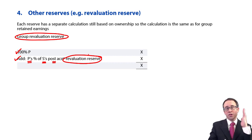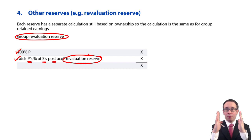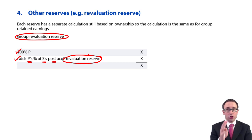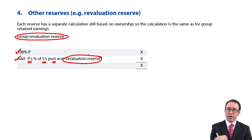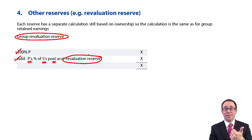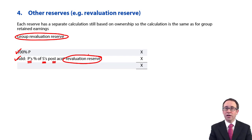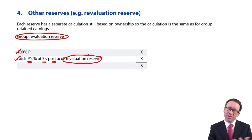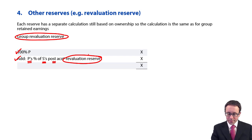You would look at S's revaluation reserve at acquisition, you would look at it at the reporting date, look at the movement and give the parent its share. Just be aware you would then also within the non-controlling interest need to give the non-controlling interest their share as well. Within the NCI, it's the NCI at acquisition plus the NCI share of the post-acquisition retained earnings plus the NCI share of the post-acquisition revaluation reserve. You don't see that a great deal, but if it does crop up, it could actually be some reasonably okay marks once you've settled yourself into the world of group accounts.